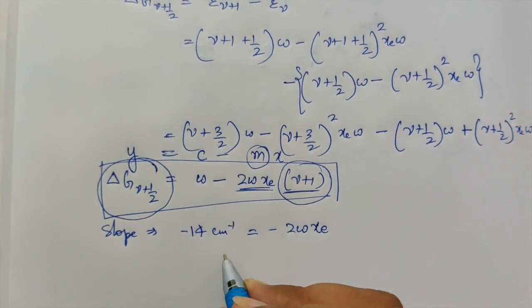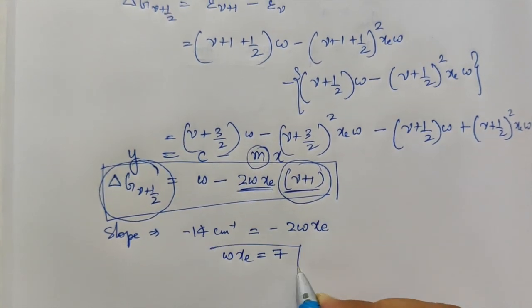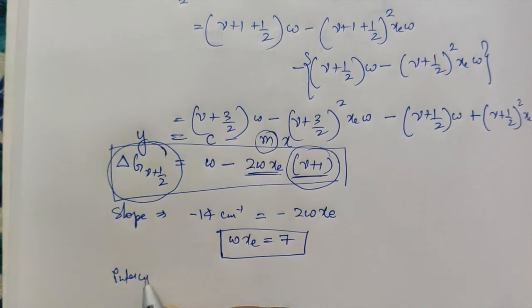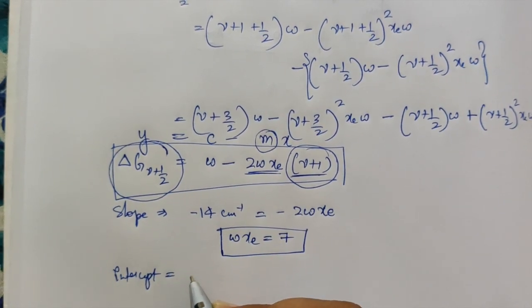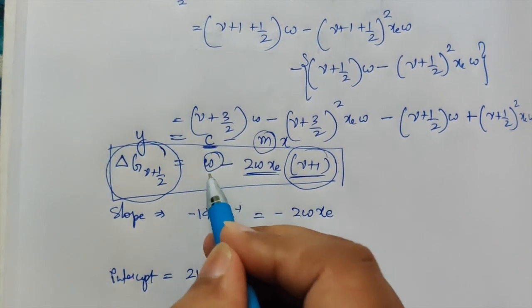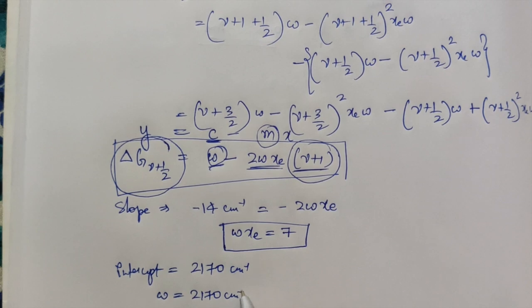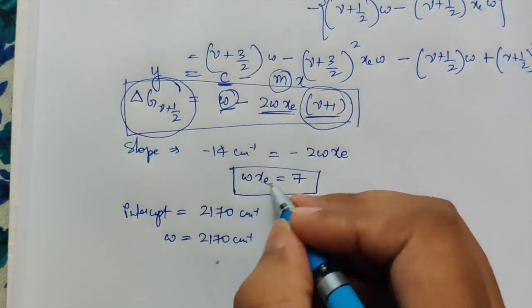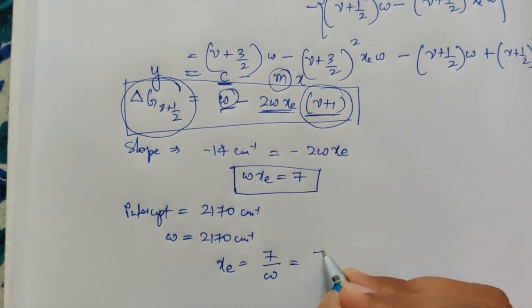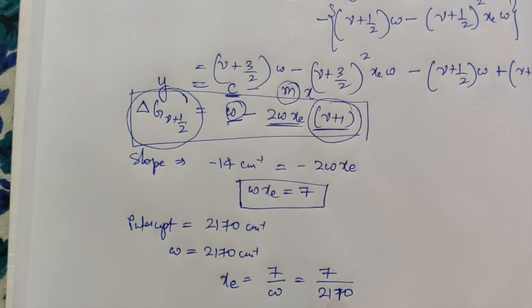So ωXe equals 7. The intercept is the ω part, so ω = 2170 centimeter inverse. We can also calculate Xe: Xe = ωXe / ω = 7 / 2170.